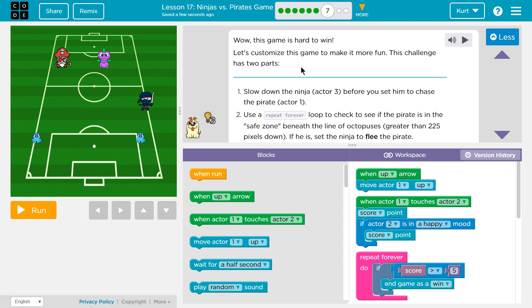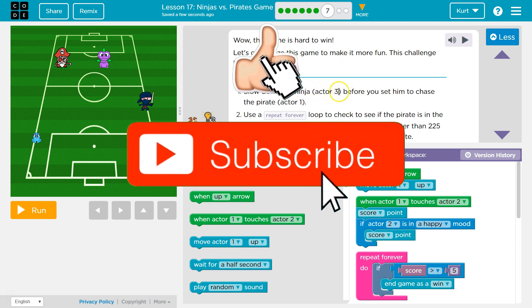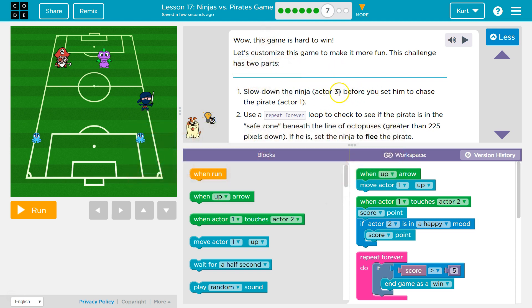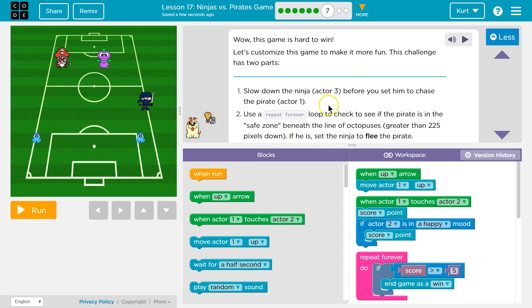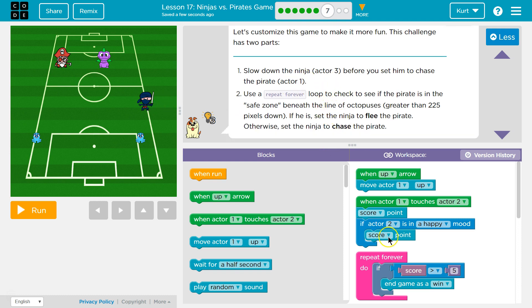Slow down the ninja actor 3 before you set him to chase the pirate actor 1. And remember the computer calls the ninja actor 3. It doesn't use the term ninja. It thinks actor 3 and pirate actor 1. Use a repeat forever loop to check to see if the pirate is in the safe zone beneath the line of the octopus. Greater than 225 pixels down. I bet we need to know that number. If he is, set the ninja to flee the pirate. Otherwise, set the ninja to chase the pirate.